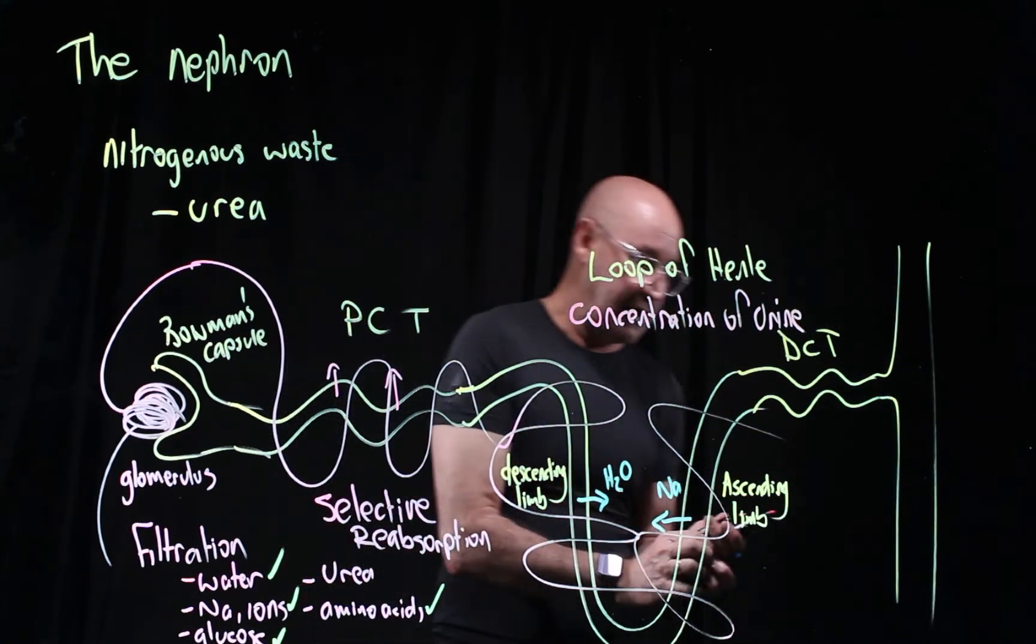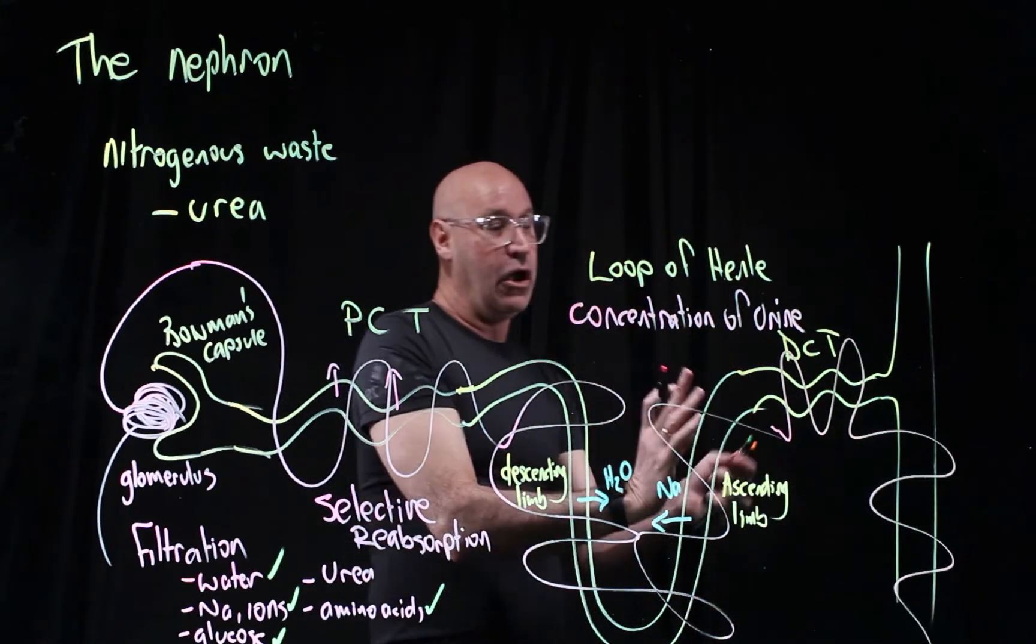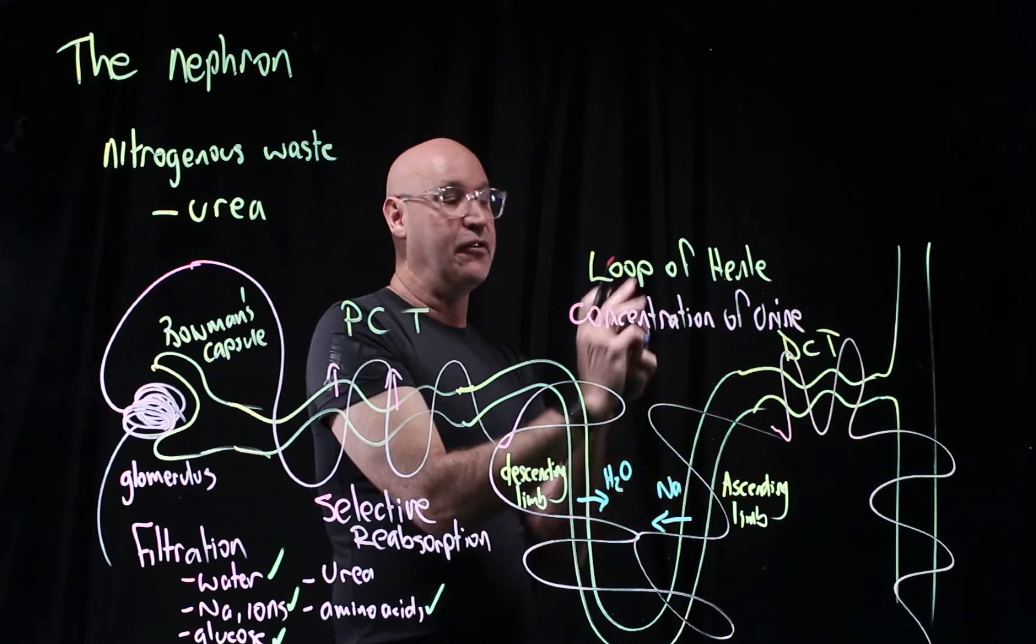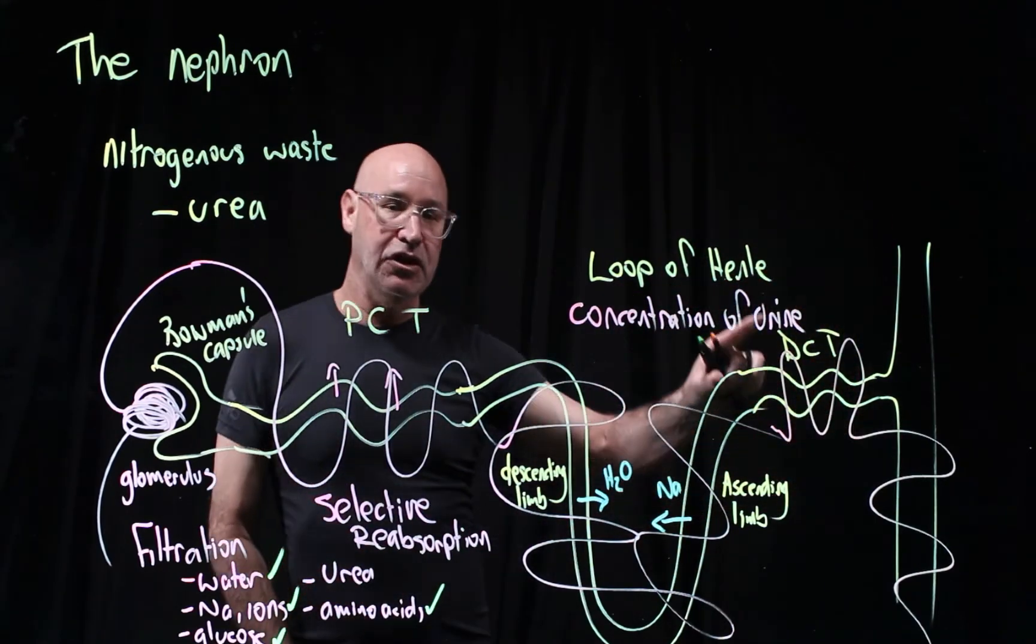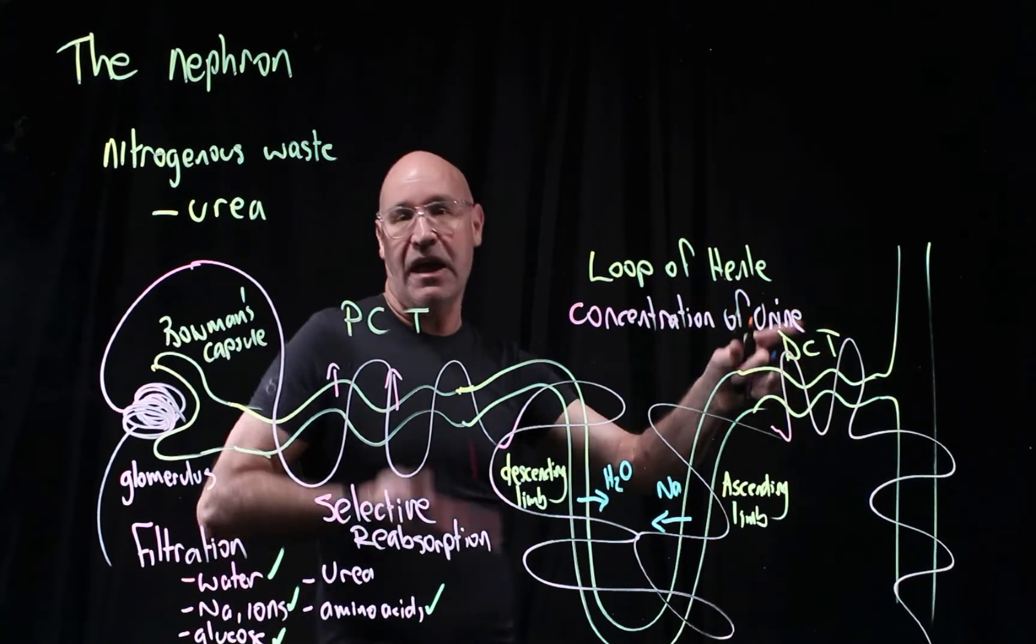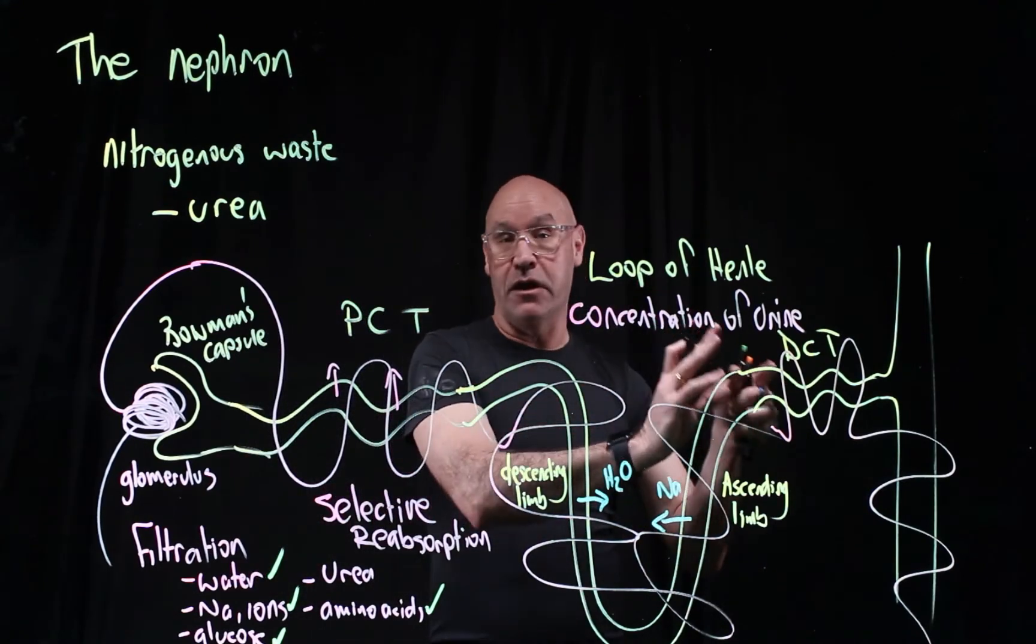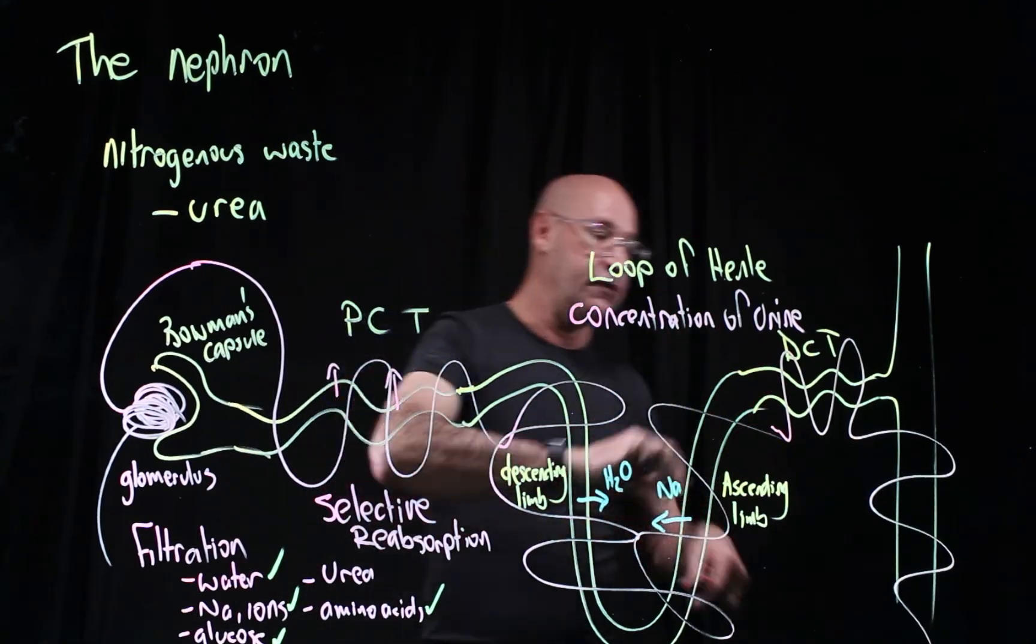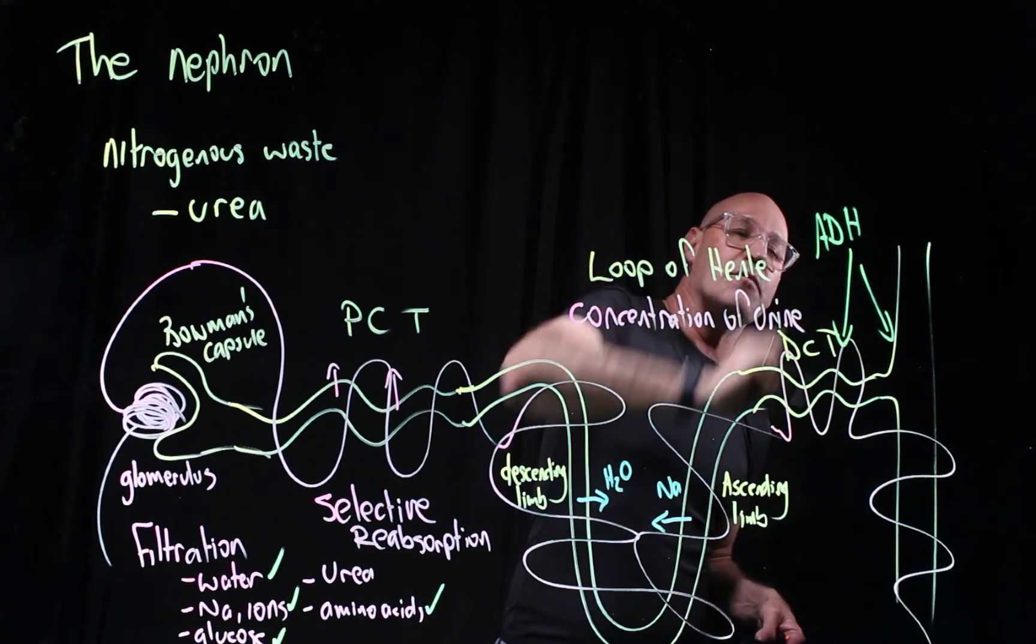Blood vessels wrap around it because this is where any final water can be reabsorbed. This part regulates the amount of water in your urine depending on how dehydrated you are. This is where anti-diuretic hormone works.